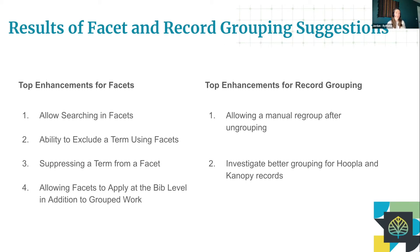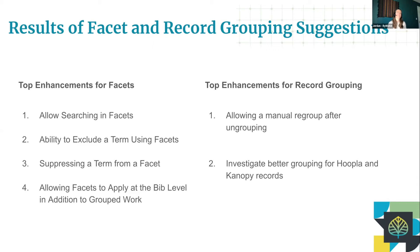For record grouping, the number one priority is allowing a manual regroup after ungrouping. Right now if you ungroup something from a grouped work, that thing cannot be regrouped with something else, and we know this is causing problems. Interestingly, this is a feature we used to have in Aspen. Giving people the ability to ungroup and regroup gives them a lot of power, and a lot of messes were created in the past, so we're going to think carefully about how to do this — but we hear you, and it's not good enough just to say ungrouping is fine.